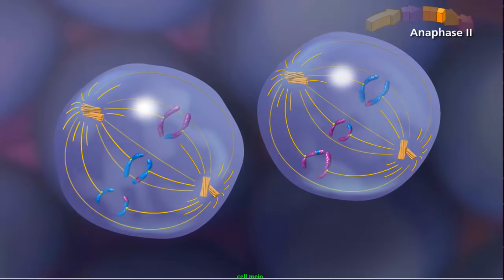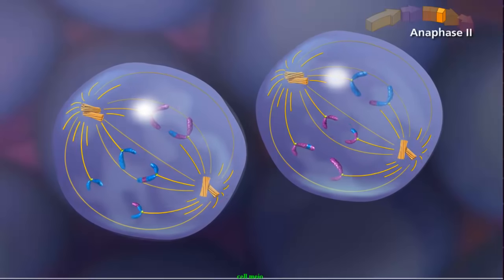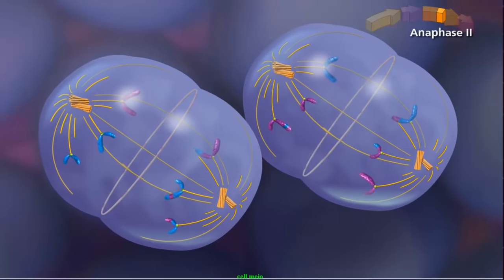During anaphase II, sister chromatids separate and individual chromosomes move toward the poles.